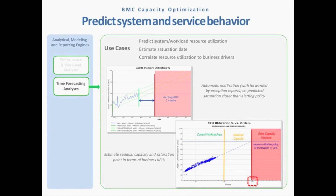You can see how many orders you can support today, then forecast out — can you support 15,000 orders per day, anticipating that level of business activity because you're launching a new product for the holiday season? This type of prediction of your system and service behavior is key to aligning your future capacity to the number of transactions you anticipate.